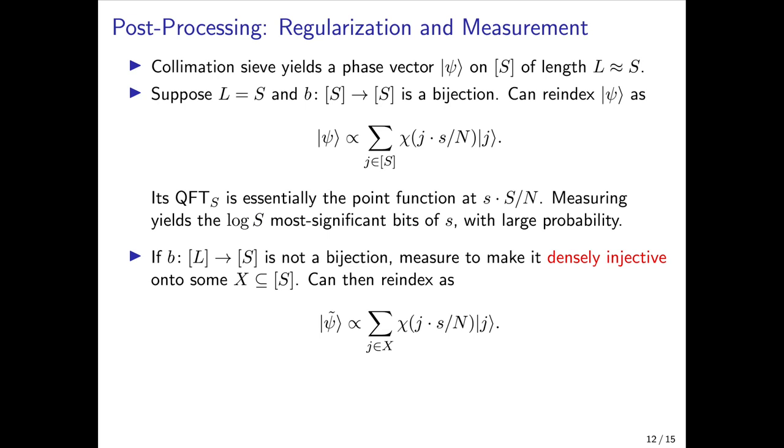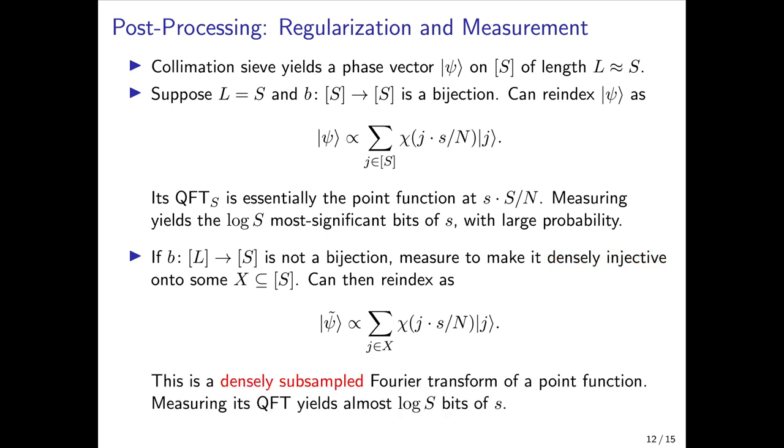In reality it's unlikely that L is exactly equal to S and that the phase vectors form a bijection. In this case we can perform a measurement to make the phase vectors injective from L into some rather large subset X of S. We can then perform a similar re-indexing to get a state that's exactly the same except it's only over a subset of the basis elements. This is essentially a very densely subsampled Fourier transform of the same point function as above, and it turns out that measuring its Fourier transform also yields almost log S bits of our secret element.